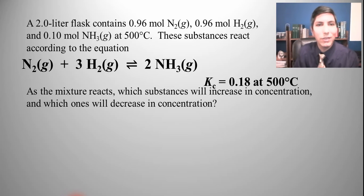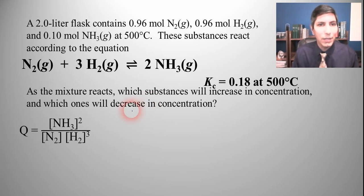Let's try another example. We have a 2-liter flask that contains 0.96 moles of nitrogen, 0.96 moles of hydrogen, and 0.1 moles of ammonia gas at 500 degrees Celsius. And they're going to react. As it reacts, which substances increase and which ones will decrease? So once again, we're going to plug these into our reaction quotient expression.